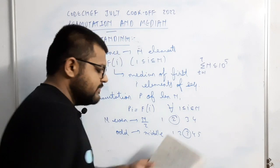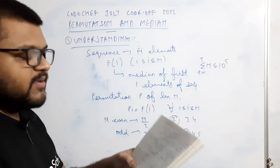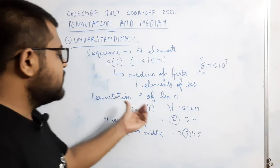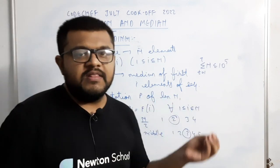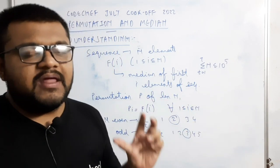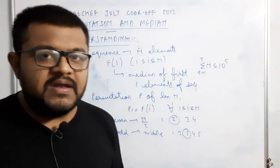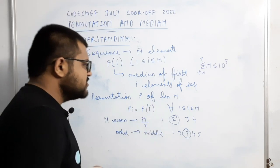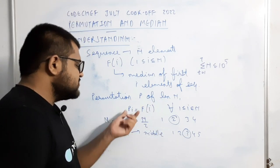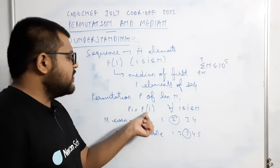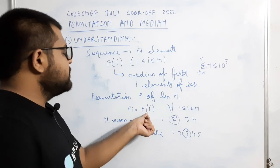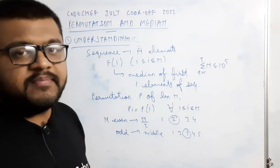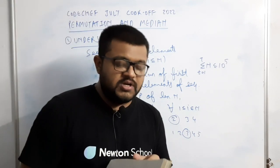Agar n odd hai toh obviously middle element hi consider karna hai. Aur uske baad permutation ki definition di gayi hai — permutation of length n is nothing but an array of first n numbers in any order. Toh aisa hume permutation print karna hai such that P(i) equals f(i), where f(i) is the median of the first i elements of the sequence.